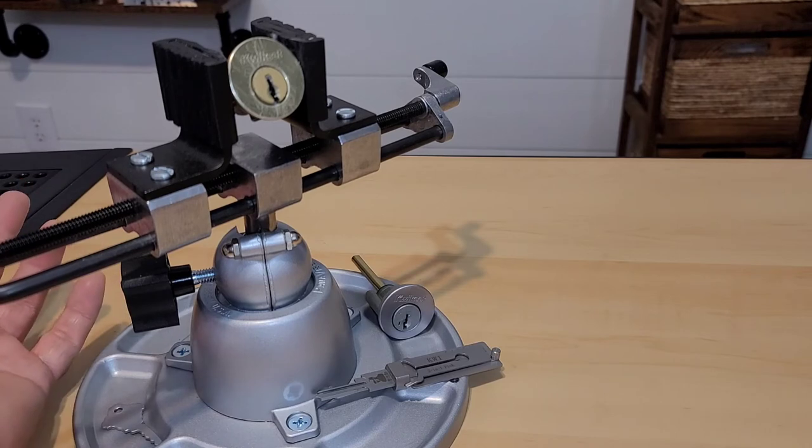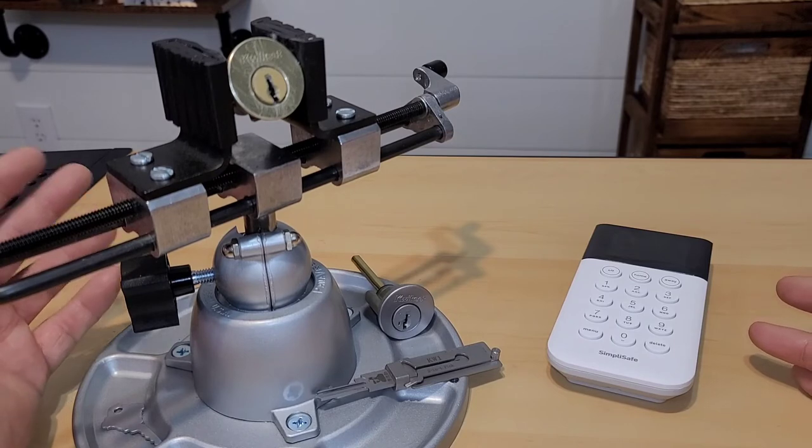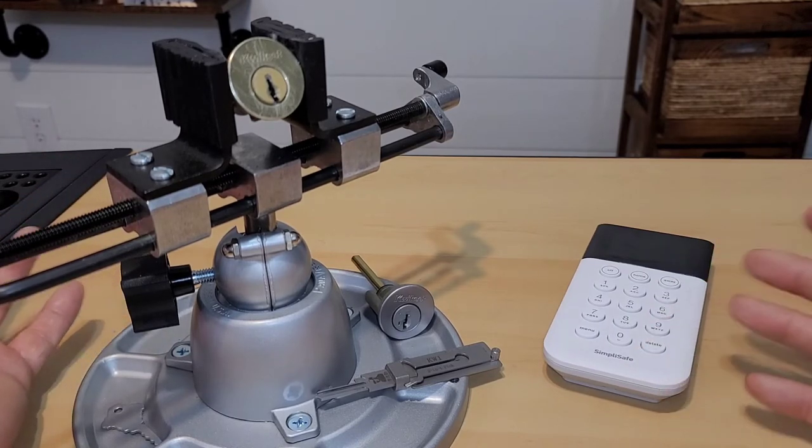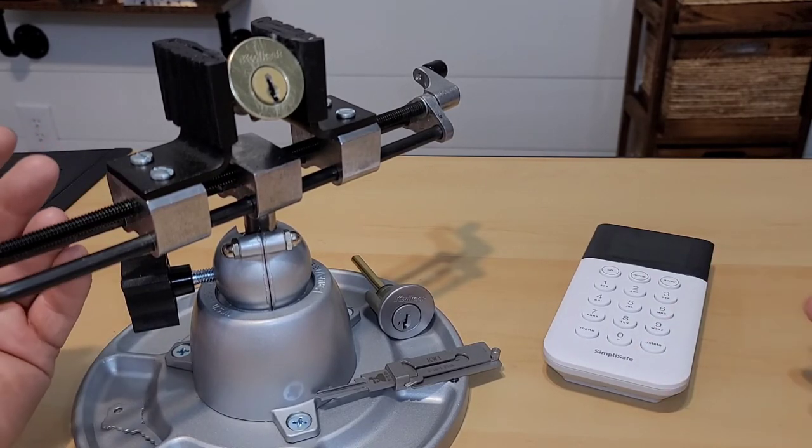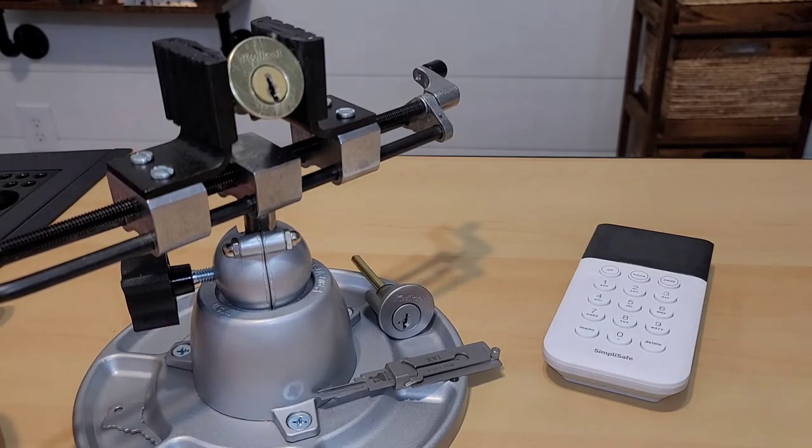In all fairness, almost every lock out there has some sort of vulnerability, and so if you don't feel comfortable with that, there are other options. People have chosen to have alarm systems at their house, either monitored or not monitored. This one just happens to be a SimpliSafe keypad, but there's Ring, there's ADT, there's so many things out there to provide a secondary level of security for your house.